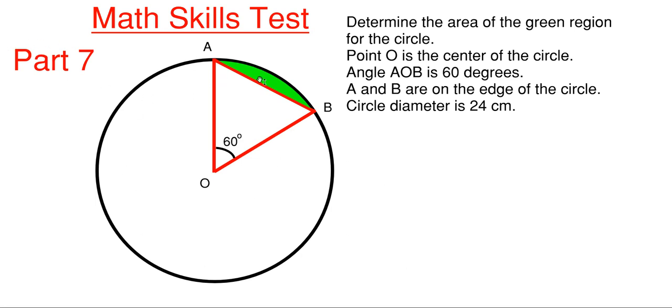What we have going on here today is that we have this circle and we have this triangle shown here and this green region right here. The green region is where we have to find the area. Point O right here is the center of the circle.